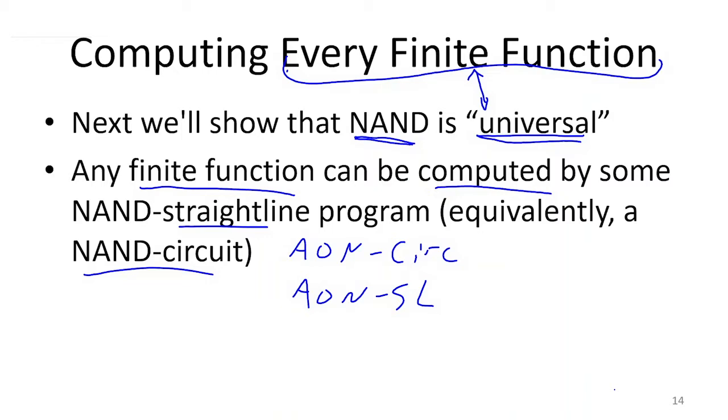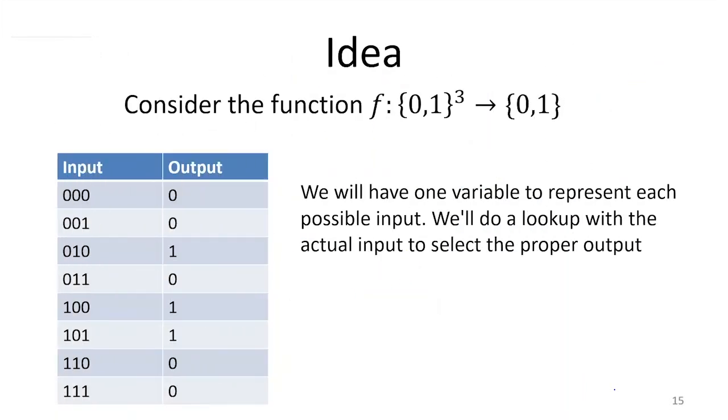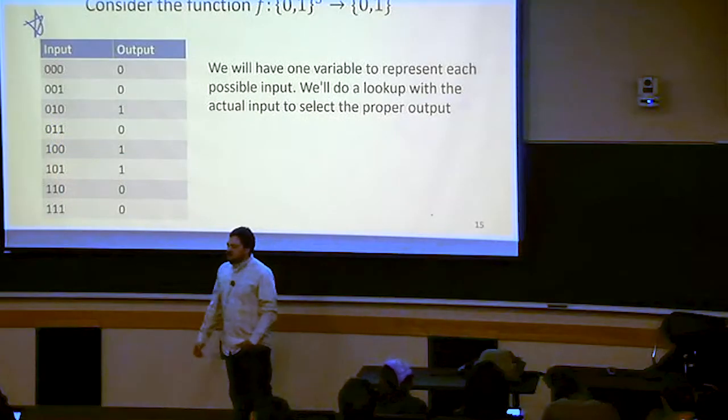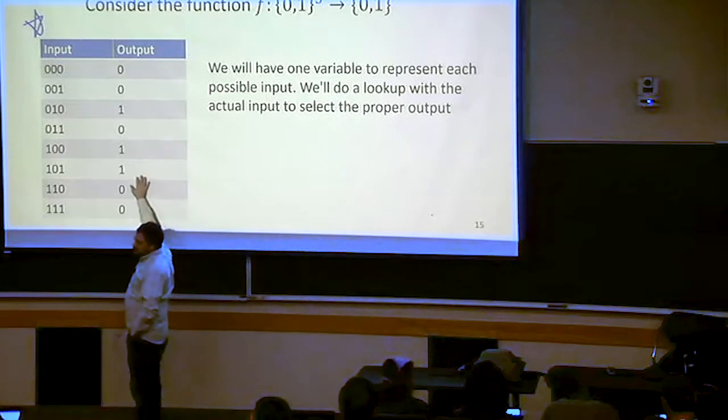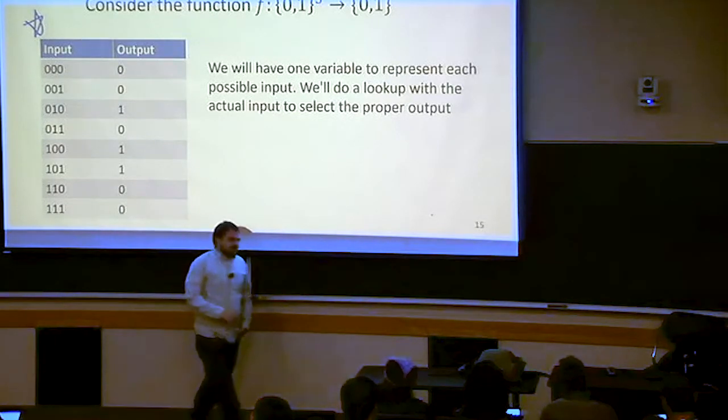Let's consider that I have this function that takes three bits as input and gives one bit as output. So this box over here, this is where I'm defining my function. Here is the input-output table to that function. I didn't pick any particular function for this, I just picked some random things. That's kind of the point, that it doesn't matter what function we write down in this table, we're just going to be able to implement whatever that is.